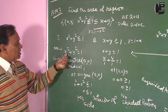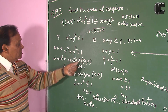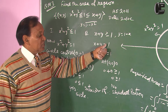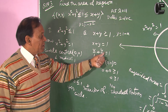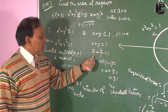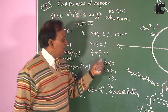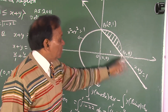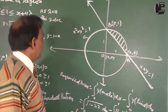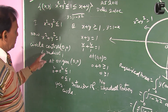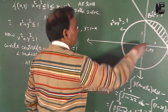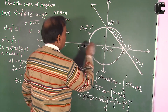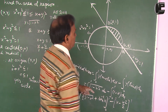This is the first curve — it is a circle with center (0, 0) and radius 1. The second curve is a straight line: putting in intercept form, x plus y equal to 1 cuts intercepts of 1 on both axes. So this is the line x plus y equal to 1, with the circle having points (−1, 0) and (1, 0).